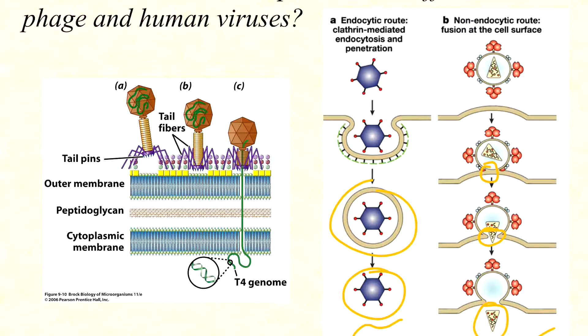Compare these to the injection process of a phage, where the DNA alone gets in — not the entire nucleocapsid. How does release differ between phage and human viruses? In phage release, it always comes from lysis. A bacterial cell bursts with hundreds of individual virions. Even a lysogenic phage must re-enter the lytic cycle to be released.